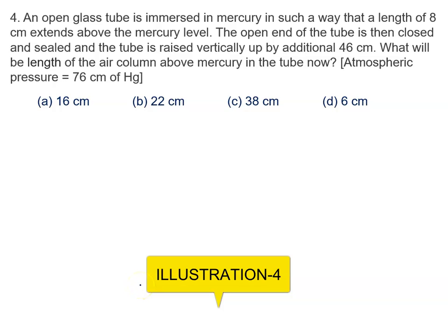An open glass tube is immersed in mercury such a way that a length of 8 cm extends above the mercury level. Let's say this is the container. In the container there is mercury. We put an open glass tube inside it and a length of 8 cm extends above the mercury level. This length is given to us, that is 8 cm.